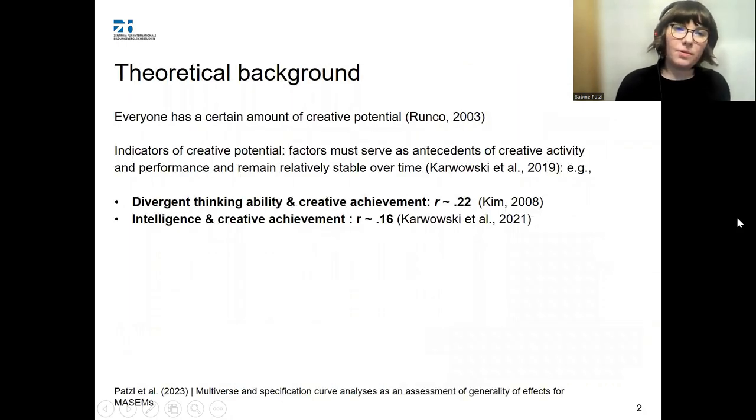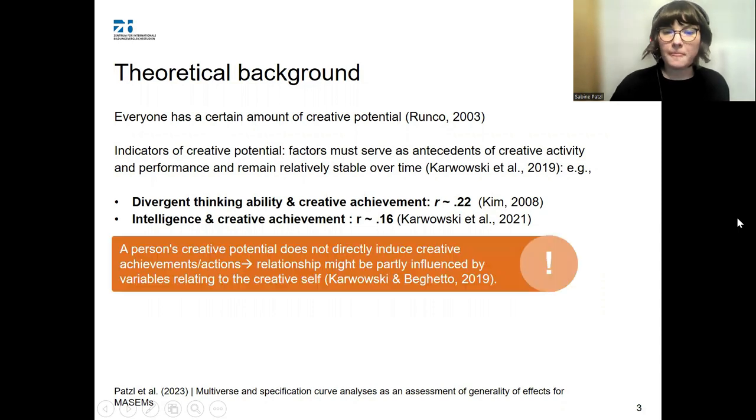I would like to start off with a quick theoretical background. Basically, it's assumed that everyone has a certain amount of creative potential within them. Two indicators of creative potential are, for example, divergent thinking and intelligence, both of which correlate with creative achievement. However, creative potential does not necessarily lead to creative achievements, as the relationship might be partially influenced by factors relating to the creative self, such as creative self-beliefs.